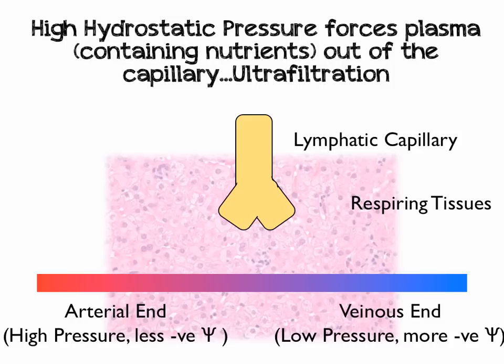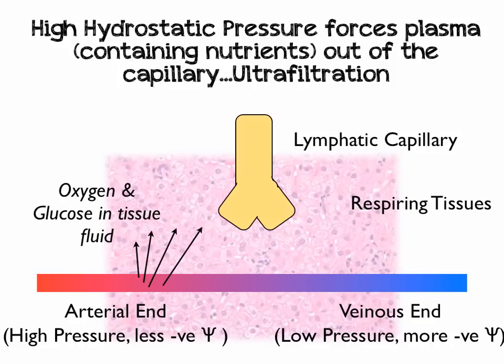At the arterial end of the capillary, there's really high hydrostatic pressure, as a result of the contractions of the left ventricle and also the narrowing of the blood vessels as we get down towards the arteries. This causes the blood plasma from the capillary to move out and bathe the respiring tissues, taking with it useful nutrients like oxygen and glucose.